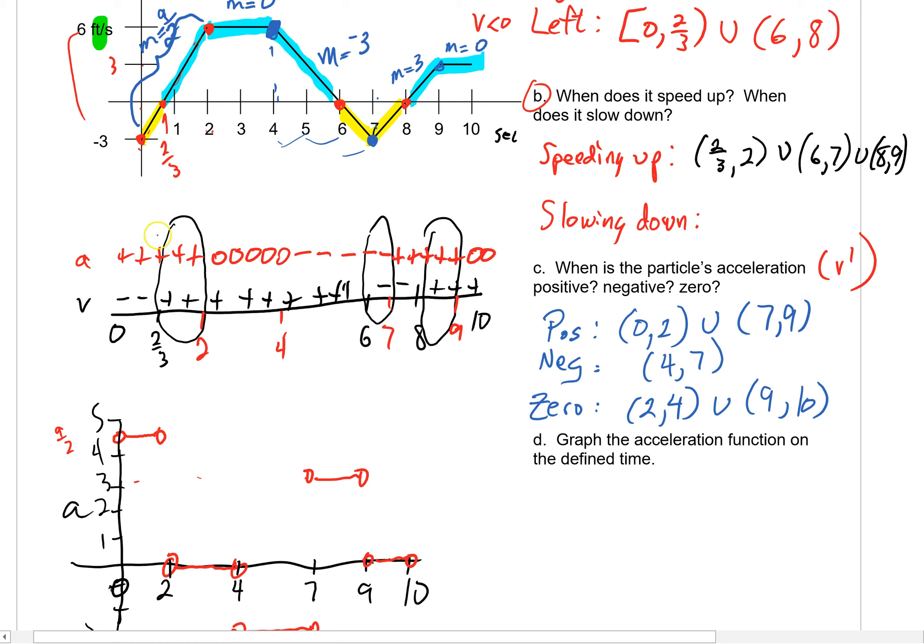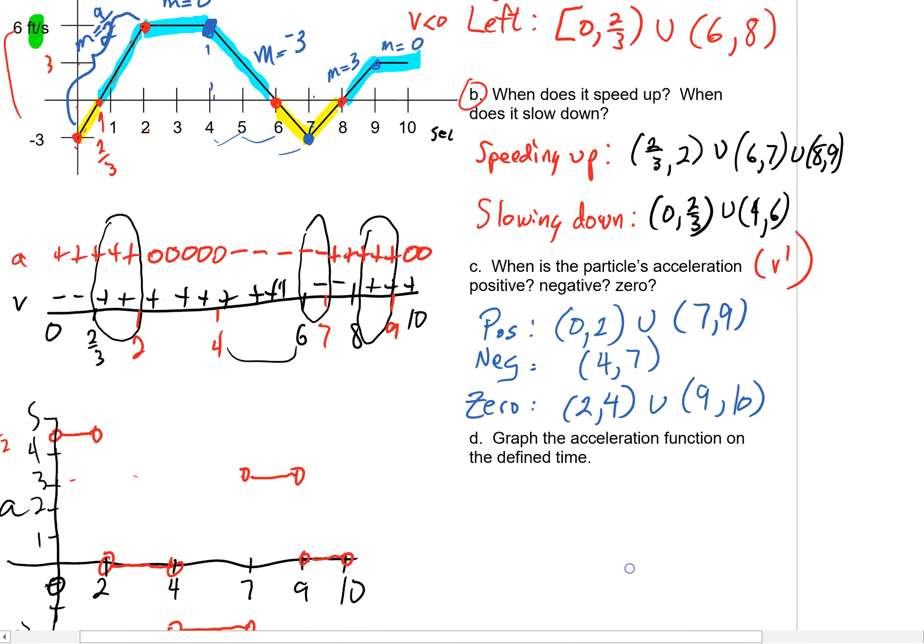And you'd say, well, where do we have opposite signs? Well, between 0 and 2 thirds. Be careful, between 2 and 4, a plus and a 0 don't have opposite signs. We've got to be so very, very careful about that. But between 4 and 6, I hope you can see, actually, that's where you do have some opposite signs there. Velocity is positive, acceleration is negative. And finally, between 7 and 8, you have opposite signs.